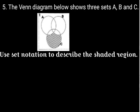So I can say: set A union B complement intersection C. That was the correct answer for this question.